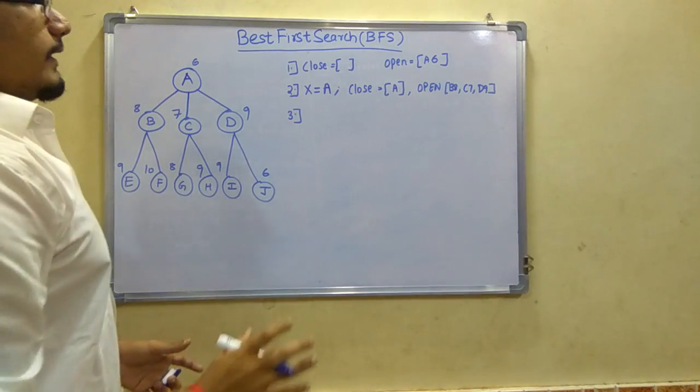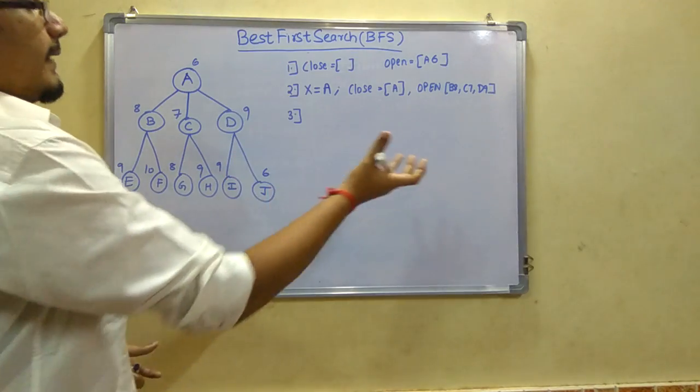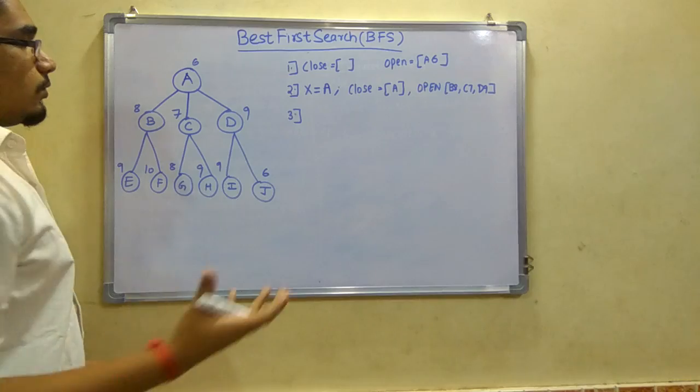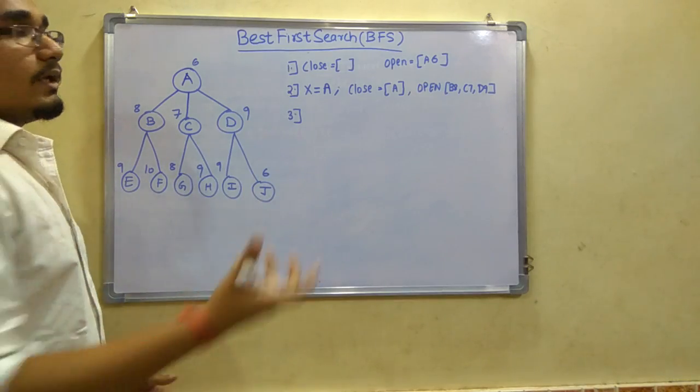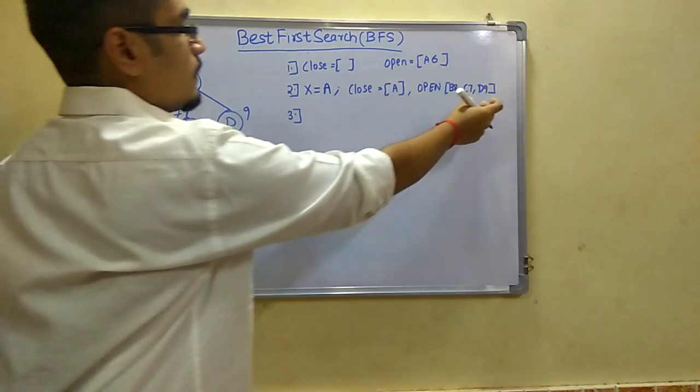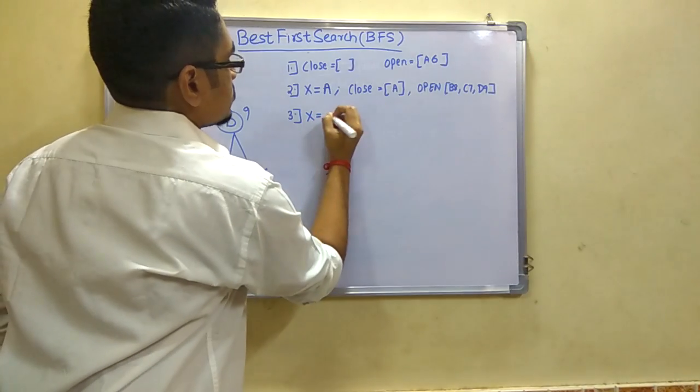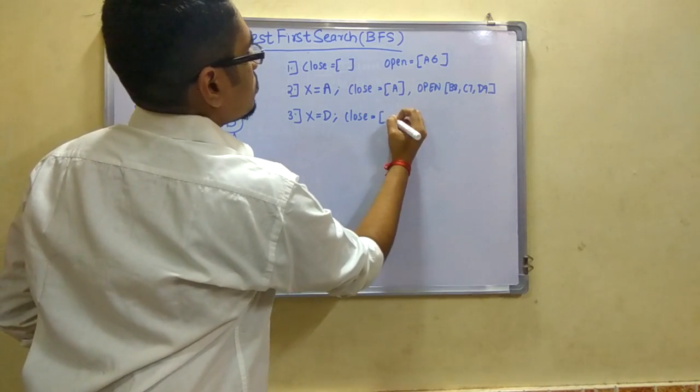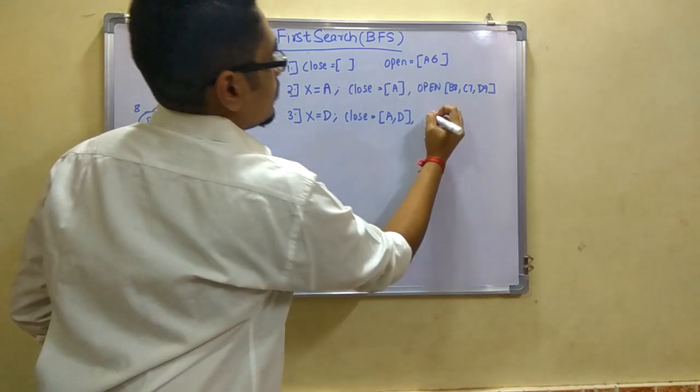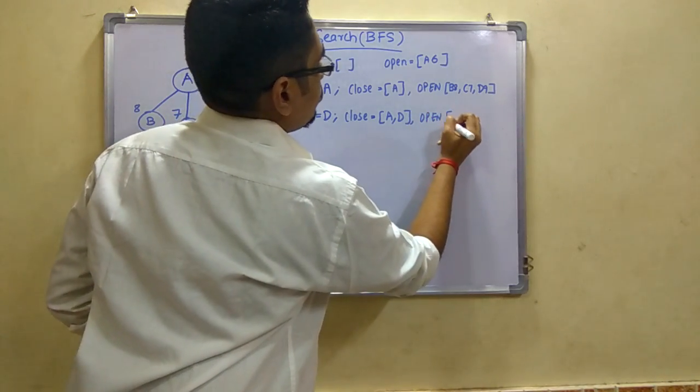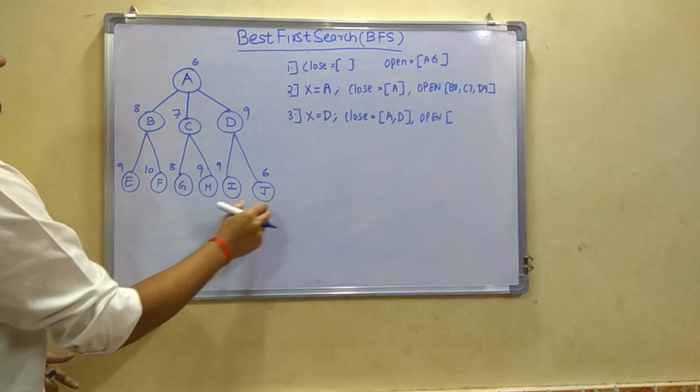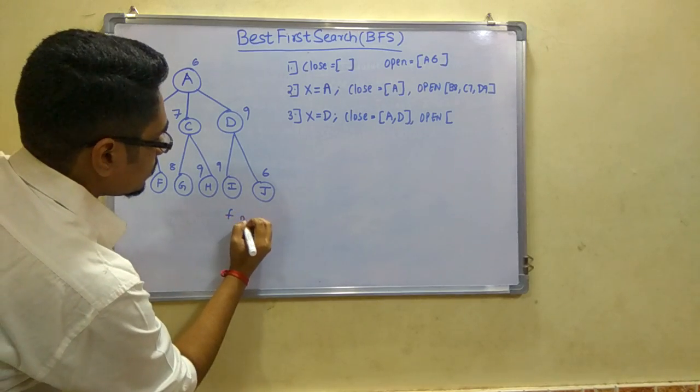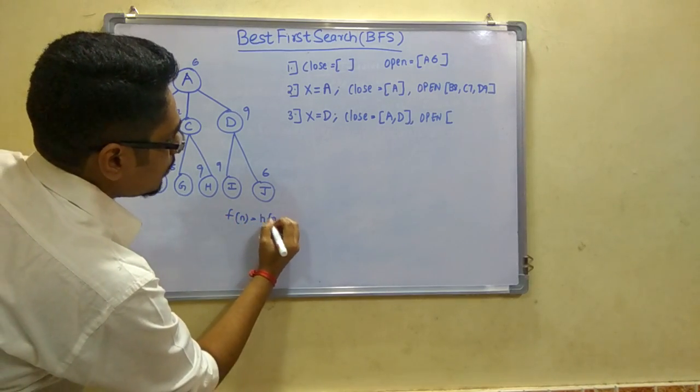Next we explore the best value or best node out of this which has the maximum weightage. According to this, D9 is the best node, so we take that and assign D to x. The set of closed nodes has A as well as D. In the set of open nodes we have D's children I and J, evaluated with f(n) = h(n).